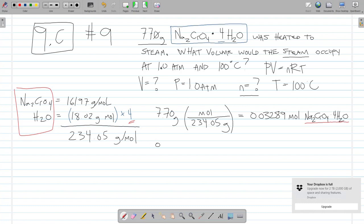I have 0.0329 moles of Na2CrO4·4H2O. And for every 1 mole of this compound, Na2CrO4·4H2O, there are 4 moles of water.